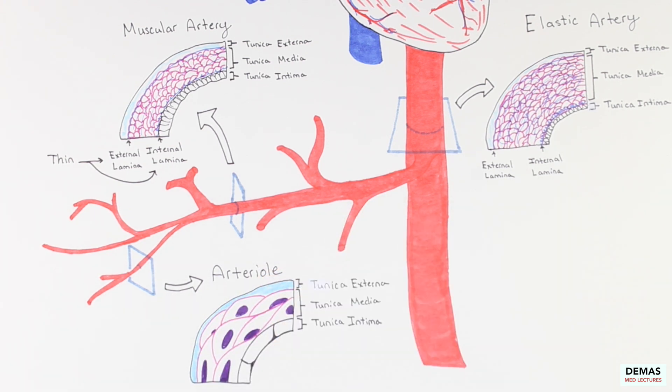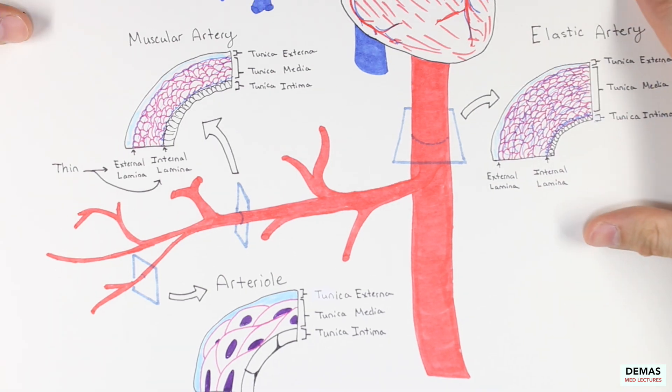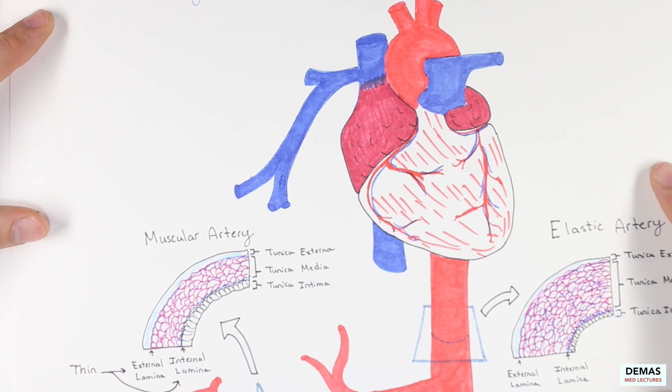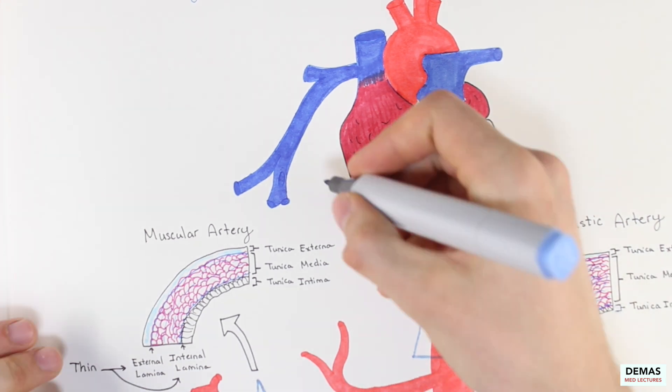The arterioles do not contain an external or internal lamina, like the muscular or elastic arteries. Now that we have discussed the arteries in great detail, let's take a moment to explore the histology of veins.